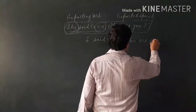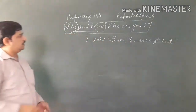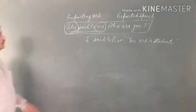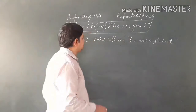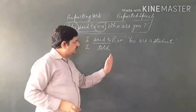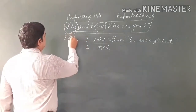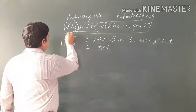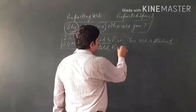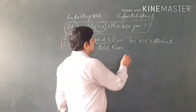For example, take the sentence: 'You are a student.' How do we change this? When we change this to indirect speech, we connect it with a reporting word. Specifically when we are dealing with simple sentences. The word 'you' is a second person pronoun, and it changes according to the object.